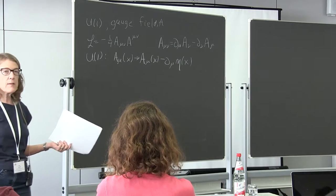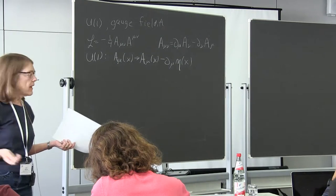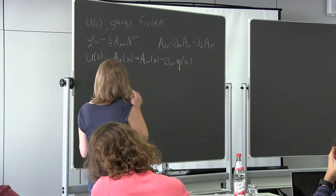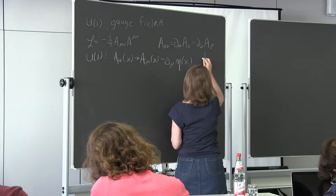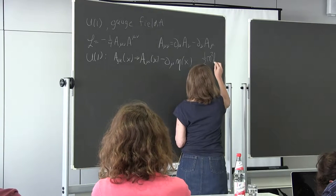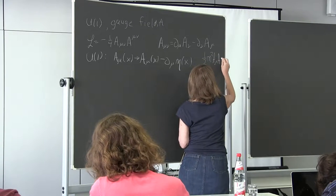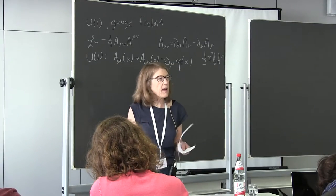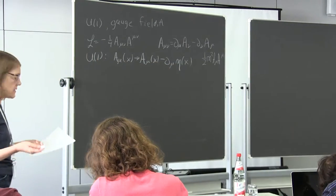This is the basic problem of electroweak symmetry breaking: if I try to add a mass term — a half M² A_μ A^μ — it violates the gauge invariance. So I'm not allowed to add a mass term for gauge bosons. We understand why the photon is massless, but how are we going to get the mass for the W?